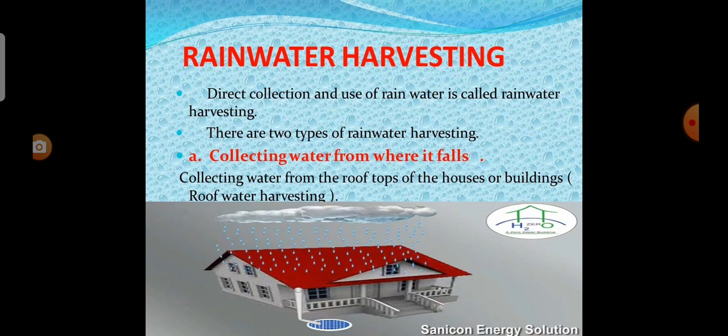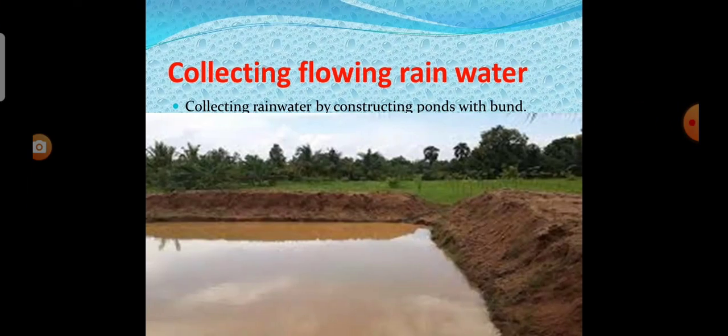The next type is rainwater harvesting. Direct collection and use of rainwater is called rainwater harvesting. There are two types: collecting water from where it falls, such as collecting water from the rooftops of houses or buildings, and collecting flowing rainwater by constructing ponds with a bund.